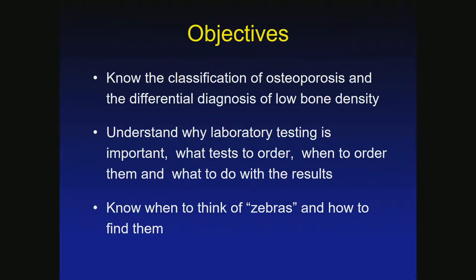These are the objectives, and this is a nice small group, so please feel free to ask questions along the way. We'll think about the classification of osteoporosis and the differential diagnosis of low bone mass, because not everyone with low bone mass actually has osteoporosis. We'll understand what laboratory testing to do, when to order it, what the results mean, and know when we need to think about zebras.